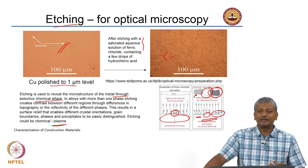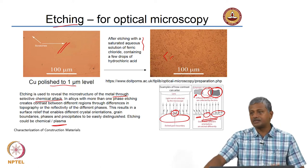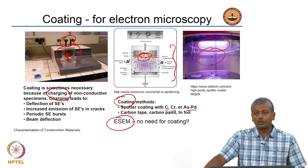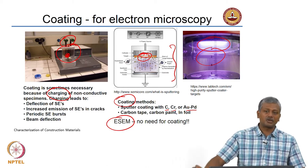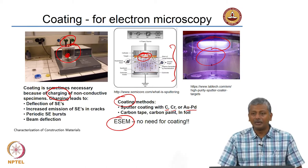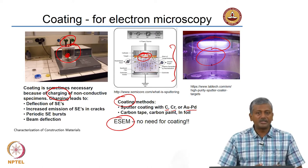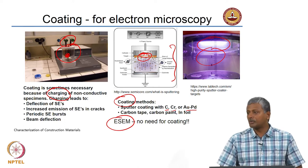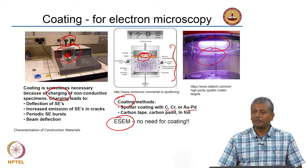We talked about certain additional aspects of specimen preparation. One is etching. Etching is basically selective chemical attack which exposes certain phases and exposes the grain boundaries in a much better fashion than if you just do polishing. Finally, we talked about coating, which is recommended for samples that are non-conductive. In non-conductive samples used in a scanning electron microscope, the electron beam tends to charge up on top of the specimen because there is nothing to conduct the beam down towards the metallic parts of the microscope. So we need a conductive surface, typically obtained by sputter coating with an element like carbon, chromium, or gold-palladium, applied as a layer on top of the specimen.